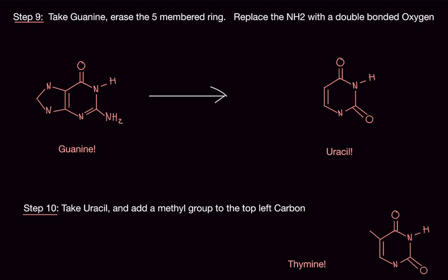Go back to guanine and erase the five-membered ring just like before. All you need to do now is take the NH2 and replace it with a double-bonded oxygen. That is uracil, which is for RNA. The last step: take the uracil and add a methyl group to the top-left carbon. And that's thymine. So those are all the nitrogenous bases.